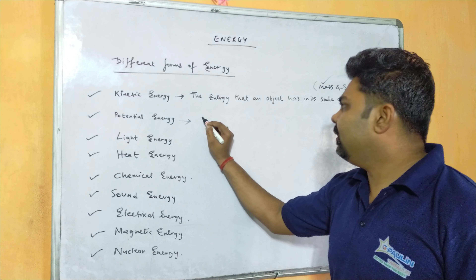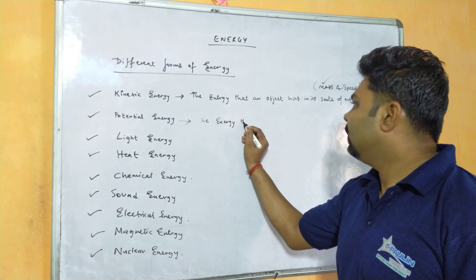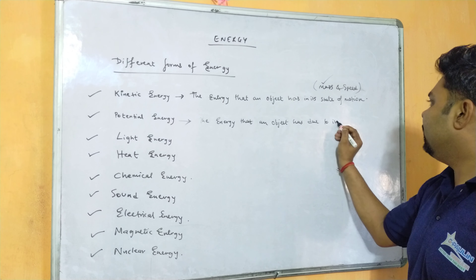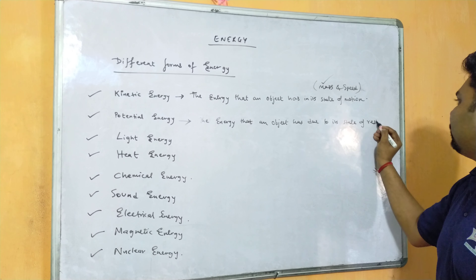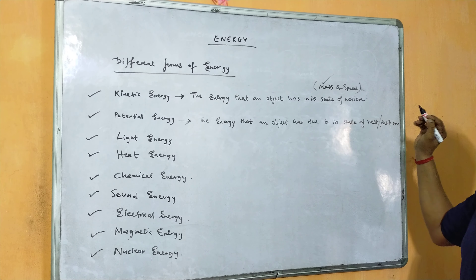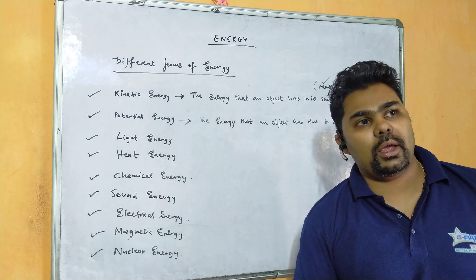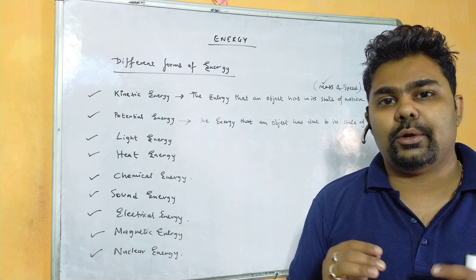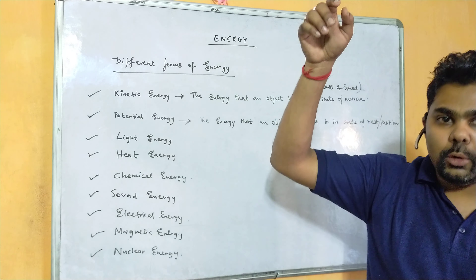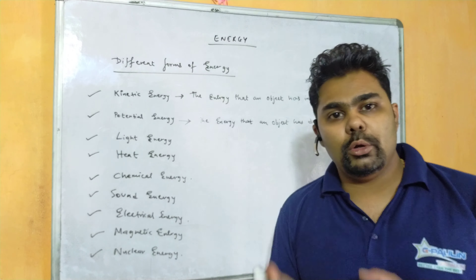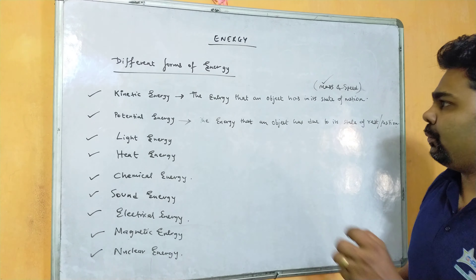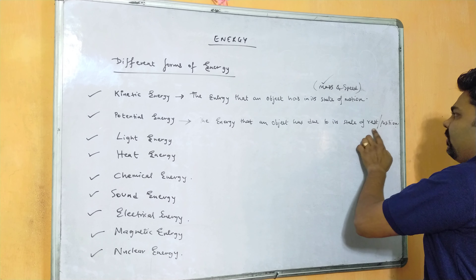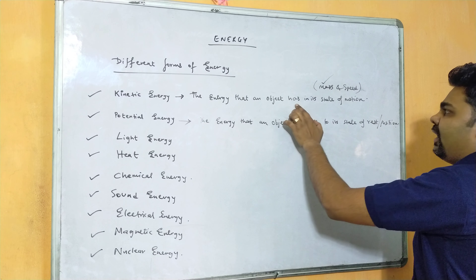Potential energy is defined as the energy that an object has due to its state of rest or position. For example, if a ball is taken to the top of a building at maximum height, it acquires potential energy. When released, it falls due to gravitational force and then possesses kinetic energy. So potential energy is energy at rest or by position, while kinetic energy is energy in motion.